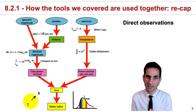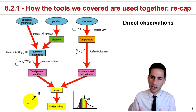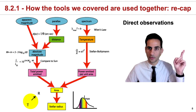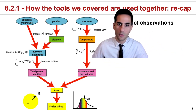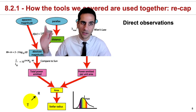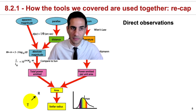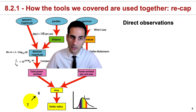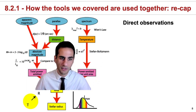Before we really discuss stars, it is also important to recap how the important equations we've just seen can be linked and used together — to essentially go from direct observations, such as a spectrum, a parallax angle, or an apparent magnitude, and how you can combine a parallax angle with an apparent magnitude to get an absolute magnitude, which then allows you to calculate a luminosity in solar units.